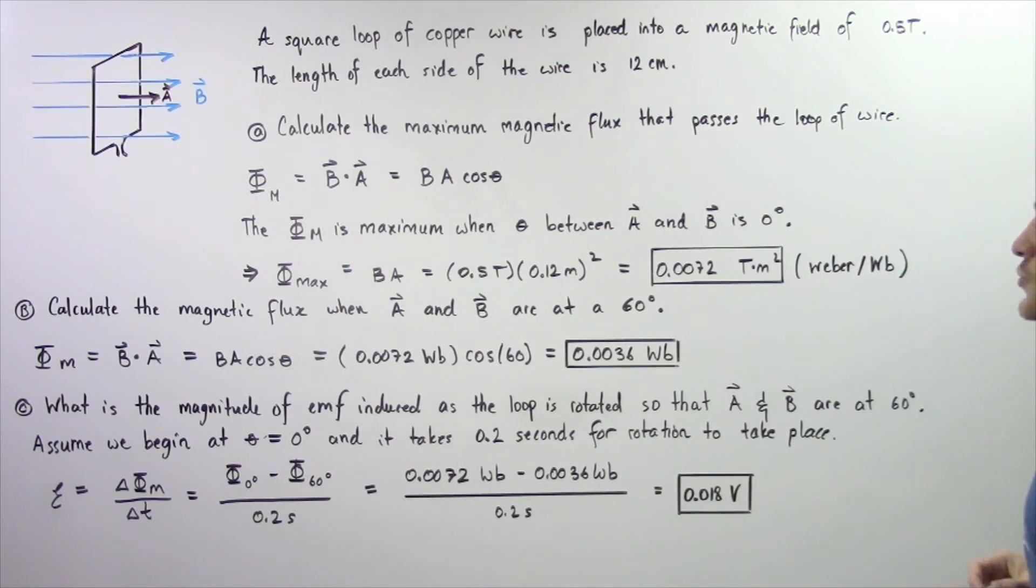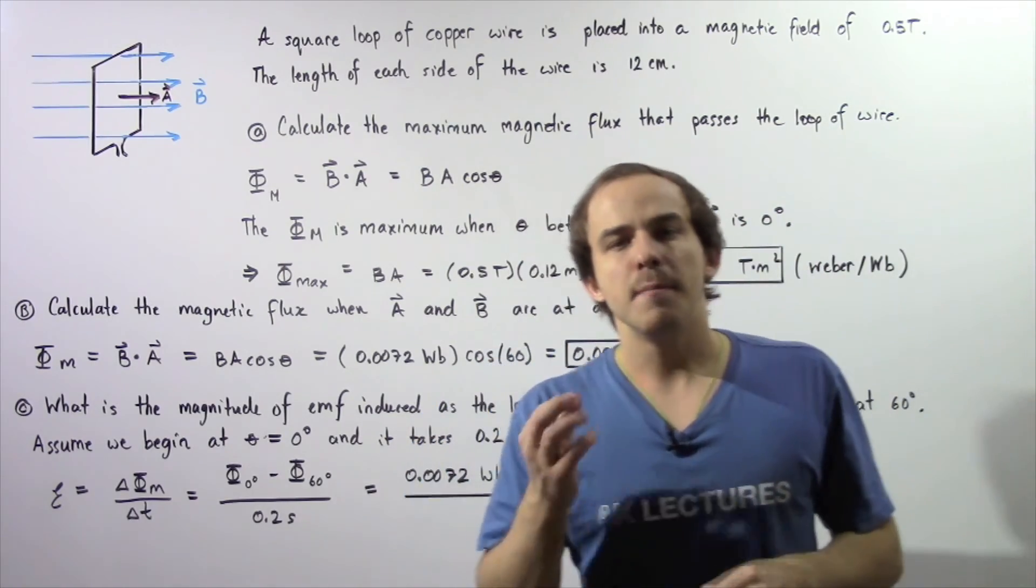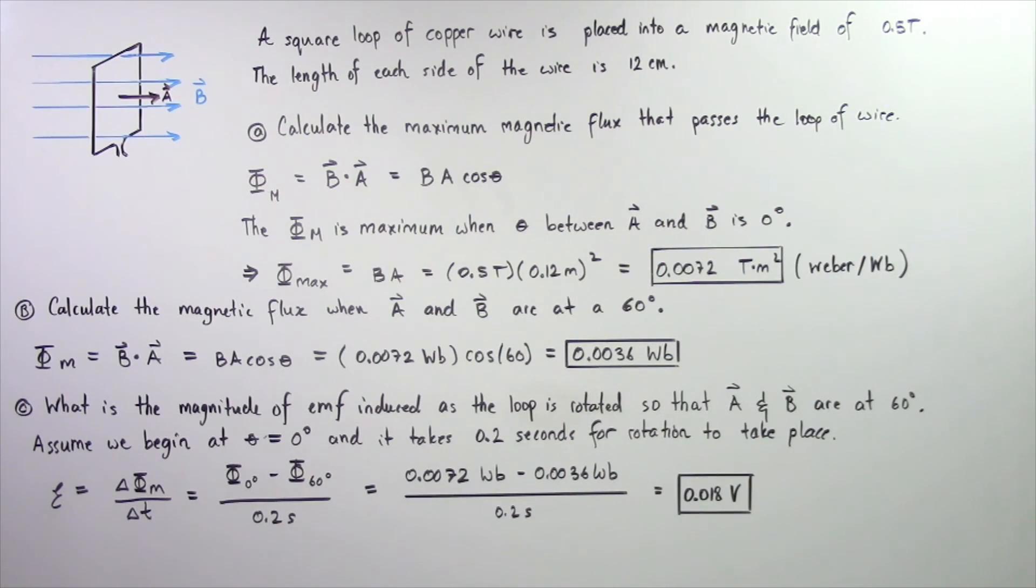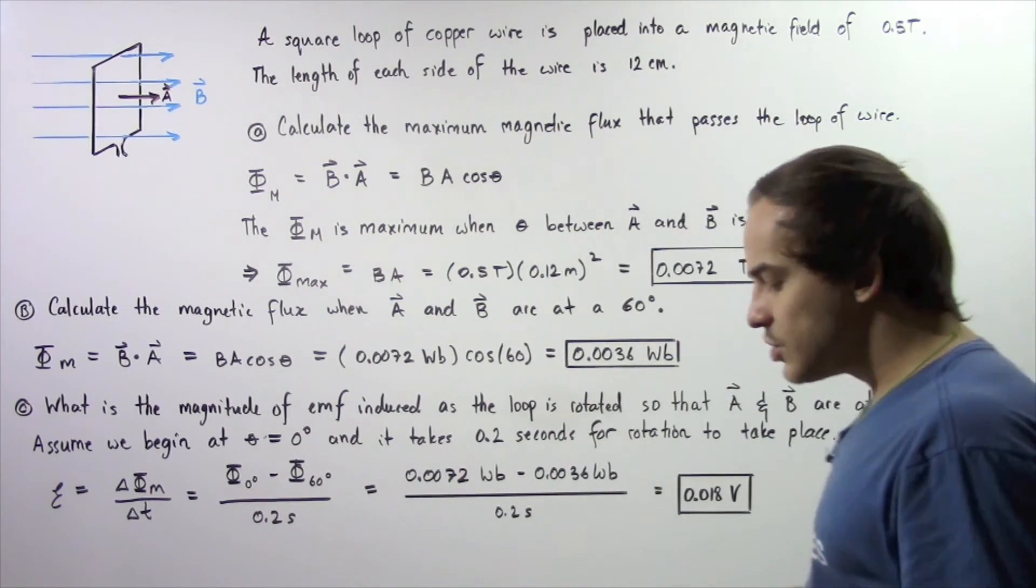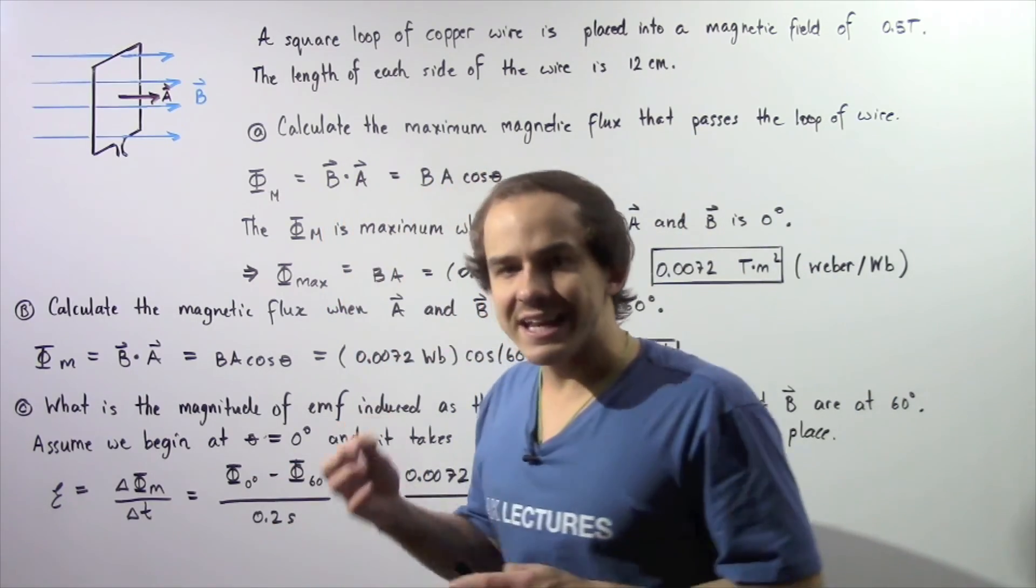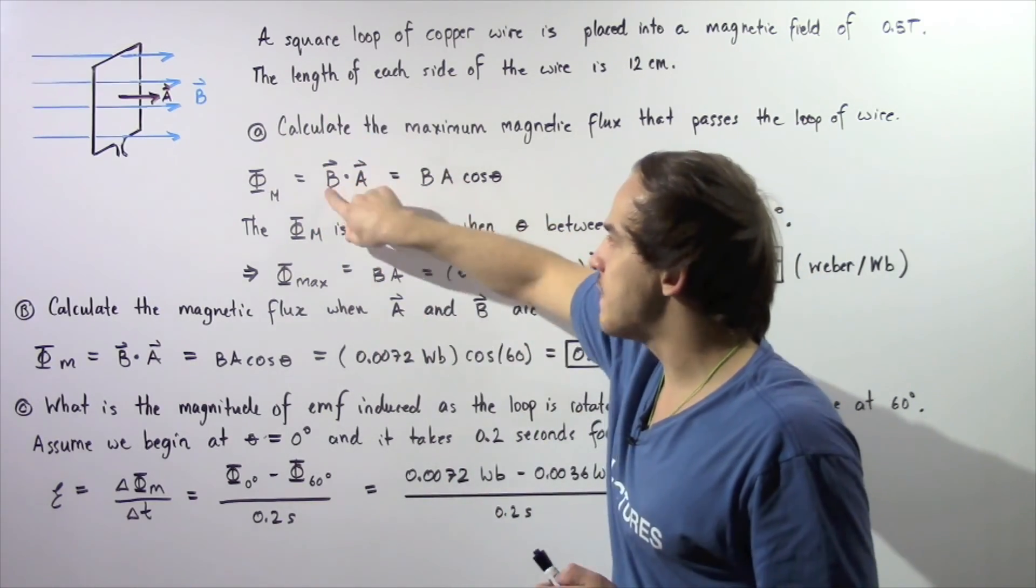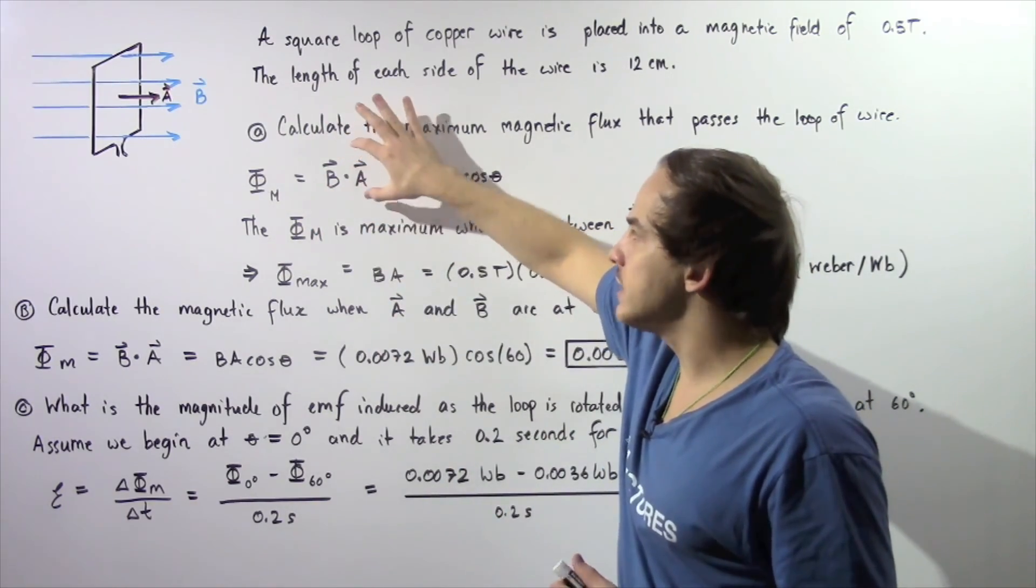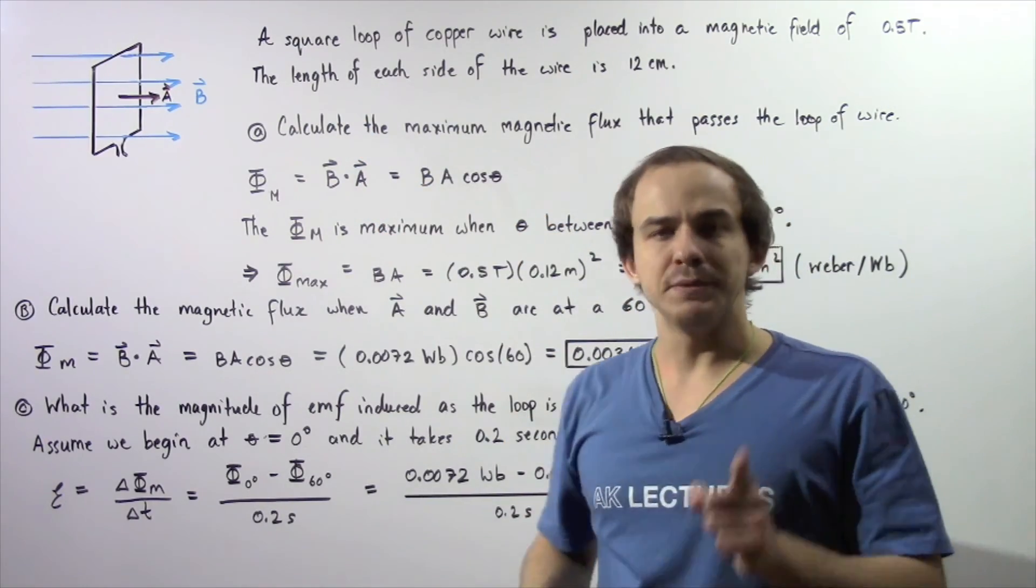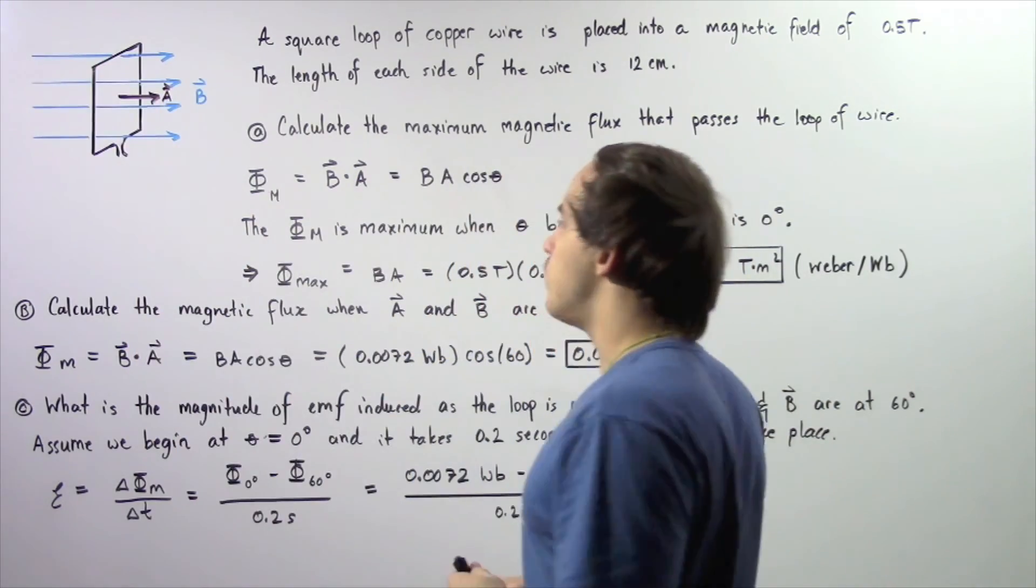Now in part A we want to calculate the maximum quantity of magnetic flux that passes through the loop of wire. So recall by definition of magnetic flux, magnetic flux is equal to the dot product of our magnetic field vector B and our area vector A, where the area vector A always points perpendicular with respect to the face of our loop of wire.